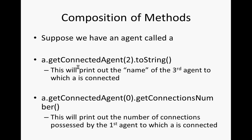Similarly, A dot get-connected-agent(0) dot get-connections-number gets the number of connections of the first connected agent. It'll give us a number — how many connections the zero-th connected agent has. Reading these expressions from left to right is important. This is one of the big things that confuses people because they don't know how to read this up front.